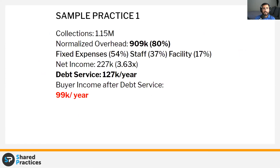Let's look under the hood. Sample Practice One: overhead is 80% — that's high by industry standards. Fixed expenses are insanely high — staff costs high, facility costs nearly triple what they should be. This dentist doing 1.15 million is taking home $227k. After you pay debt service on the $825k asking price — that's $127k a year in debt — you're left with $99k a year. The buyer emailing me was a high-earning associate making $180k a year. He said: 'I could buy this practice, have all this stress, do more dentistry, and make less money — no thanks.' And that practice flew off the shelf.